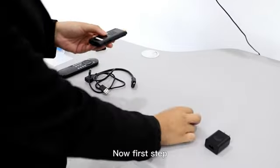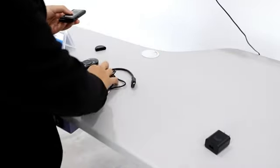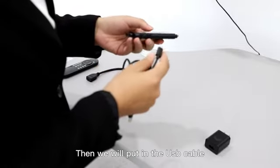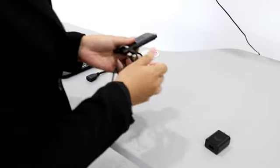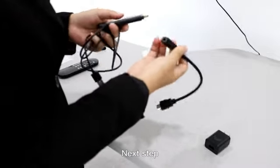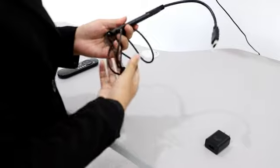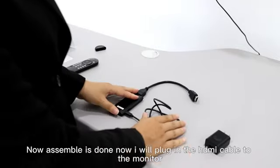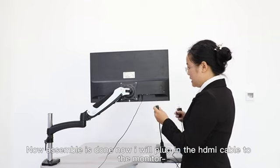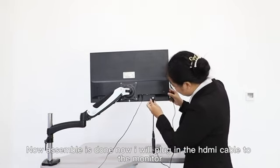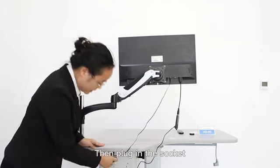Now first step, we will put in the receiver of the remote. Then we will put in the USB cable. Next step, bring the HDMI cable. Now the assembly is done. Now I will plug in the HDMI cable to the monitor, then plug in the socket.